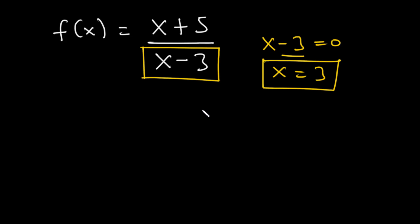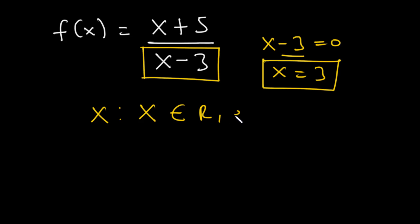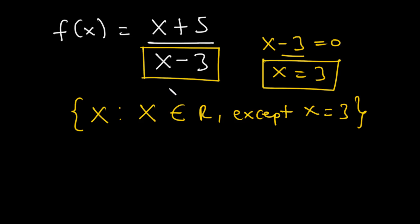So the value of x that will make the denominator go to zero is x equals 3, which means the function is going to be undefined at that point. Therefore, the domain for this function is x is such that x is the set of all real numbers except x is equal to 3, because when you put x equal to 3, the denominator goes to zero and the function becomes undefined.